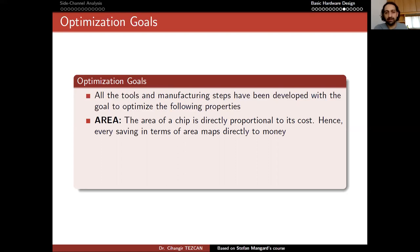As we discussed at the beginning of this lecture, in the IoT world you might need to produce the chip in huge amounts. So even saving one cent would, at the end, return as a huge saving because you will be producing maybe millions or billions of these devices. So it is really very important.